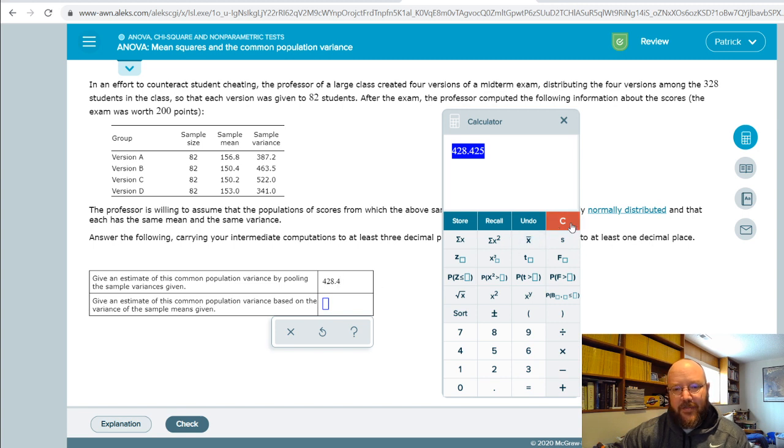Now the next one: we're going to have to calculate the sample variance for these four means. It's a common population based upon the variance of the sample means given. These are sample means, so we have to calculate the variance of these, then we have to multiply it by how many are in there because it's weighted. The way that we do that in the ALEKS calculator here is take each one of these...